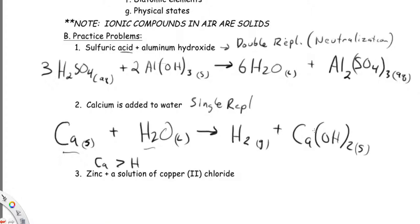Now we have to balance it. We have one calcium on each side. Here I have two hydrogens, and here's two more hydrogens, so I've got a total of four hydrogens and two oxygens. So if I put a two right there, now I can go back through: one calcium on each side, four hydrogens — one, two, three, four — and two oxygens — one, two. So we're balanced.